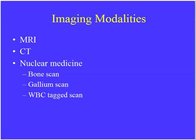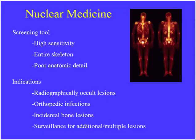Moving on to nuclear medicine — there are three types of exams used in bone imaging: the bone scan with technetium-99M MDP, gallium scan, or a white blood cell tagged scan. Nuclear medicine is a great screening tool, very highly sensitive. You can look at the whole skeleton at once, but there's very poor anatomic detail — distinguishing whether a fracture is in the proximal or distal pole of the navicular is very difficult. Indications you'll see on boards include radiographically occult lesions, orthopedic infections, evaluation of incidental bone lesions, and surveying the entire skeleton when a single lesion is found.